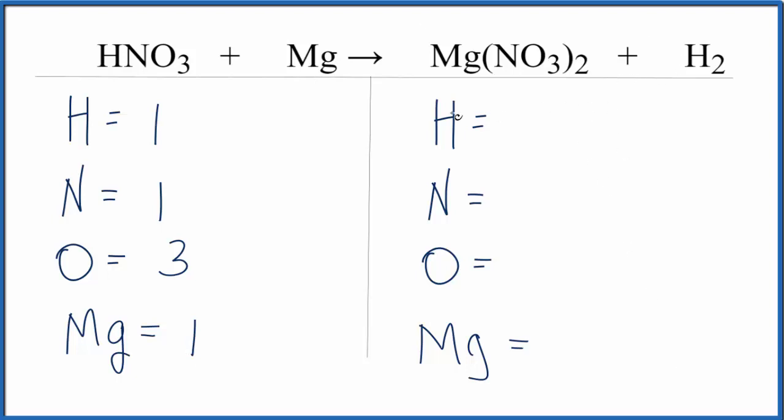Over on the product side, we have two hydrogen atoms. This two applies to everything in parentheses, so two times one nitrogen equals two nitrogens, two times three oxygens equals six, and then just one magnesium.